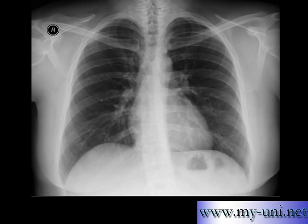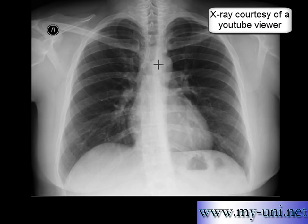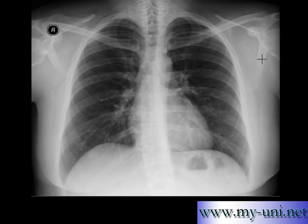How to measure cardiothoracic ratio — this is something very important for a physician to know. This is one of the basic tools to comment on cardiac size, whether the heart is enlarged in a particular person or not. Something very simple: make sure you have a PA view. Traditionally, you don't measure cardiothoracic ratio on an AP view, or if the x-ray was taken in supine position. Anyway, we have a PA (posterior-anterior) view.